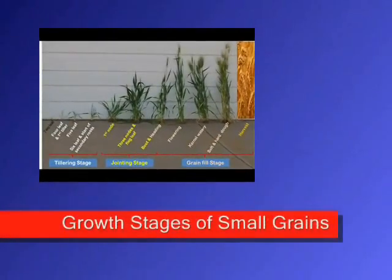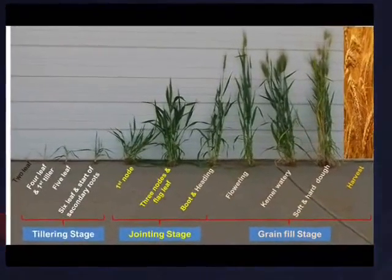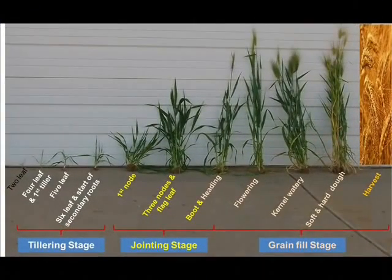The first main stage after emergence is tillering. After tillering, you go into a stage called jointing — some people call it the stooling stage — and that's where you have rapid stem expansion and stem elongation. The last major stage after tillering and jointing is the grain fill stage.